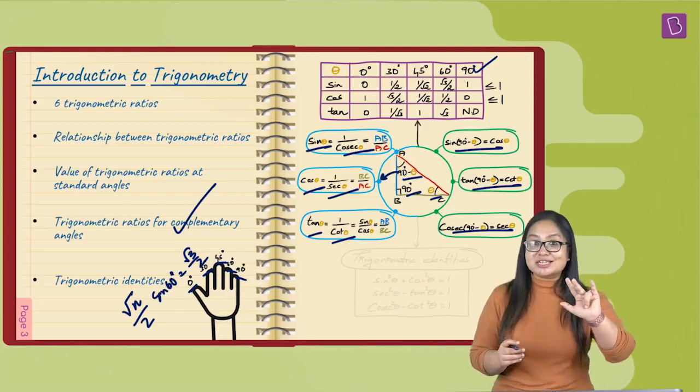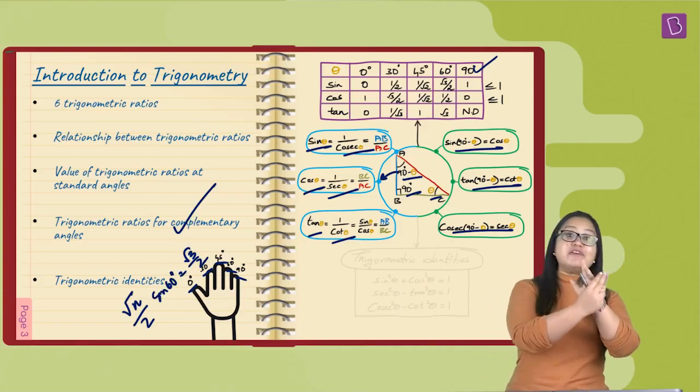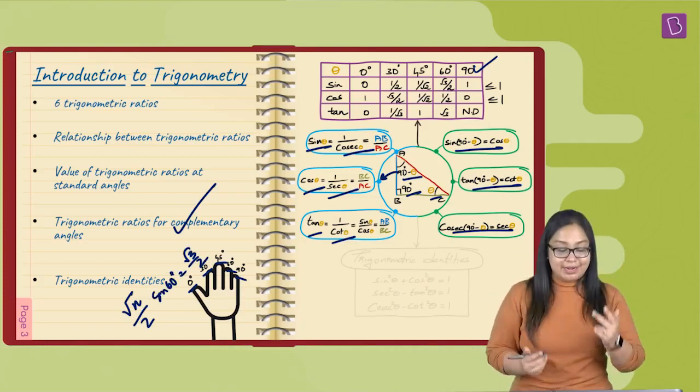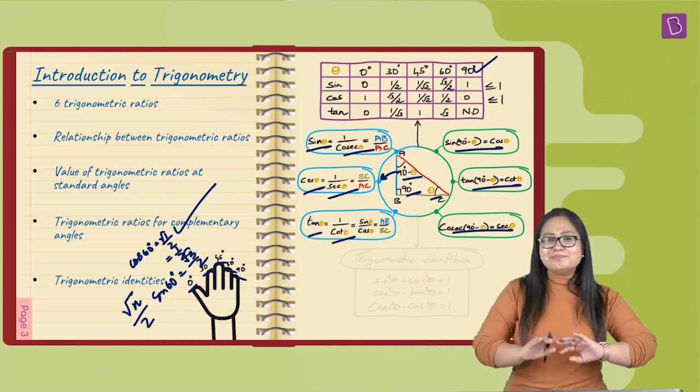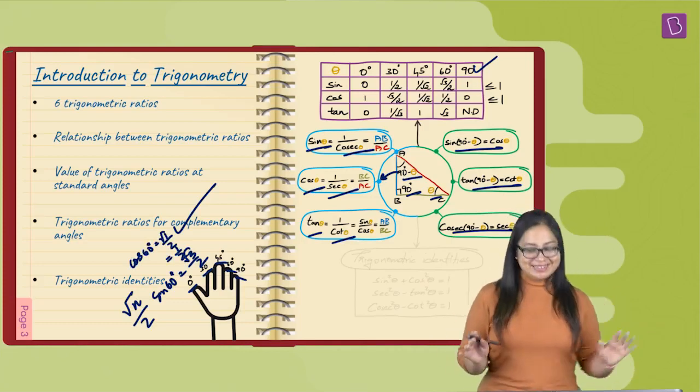Now, for cos, n is the number of fingers away from the thumb. Here, it's 1. So, cos 60 degrees is equal to root 1 by 2 which is 1 by 2. Pretty simple, isn't it?